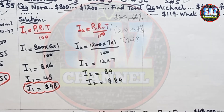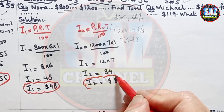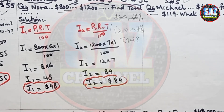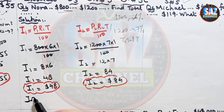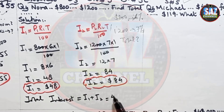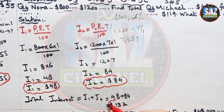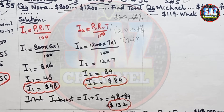The question asks for the total annual interest. To find it, we add the two interests: total interest = I1 + I2 = 48 + 84 = $132, which Nora is getting from these two investments. I hope you are clear about this question.